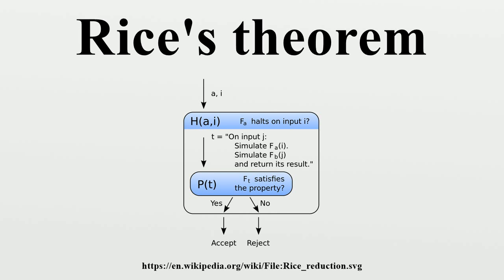Proof by reduction from the halting problem. Suppose, for concreteness, that we have an algorithm for examining a program p and determining infallibly whether p is an implementation of the squaring function, which takes an integer d and returns d². The proof works just as well if we have an algorithm for deciding any other non-trivial property of programs, and is given in general below. The claim is that we can convert our algorithm for identifying squaring programs into one that identifies functions that halt. We will describe an algorithm that takes inputs A and I and determines whether the program A halts when given input I.